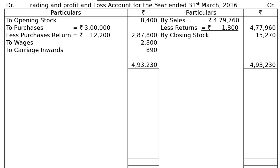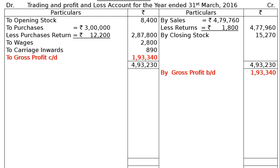Write the total rupees 4,93,230 in the debit side. After deducting all expenses we find the gross profit carried down — the difference is rupees 1,93,340. Take this gross profit to the credit side of the profit and loss account.